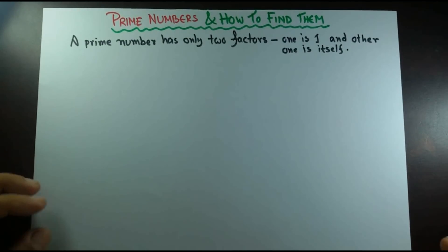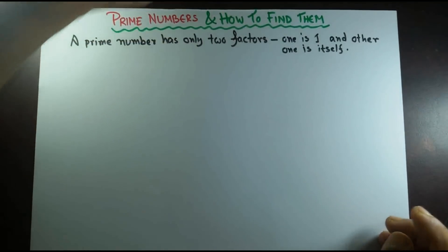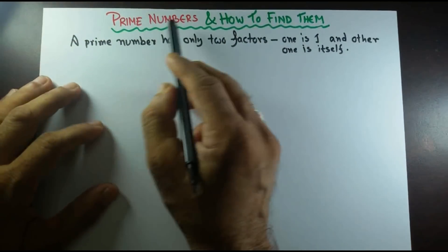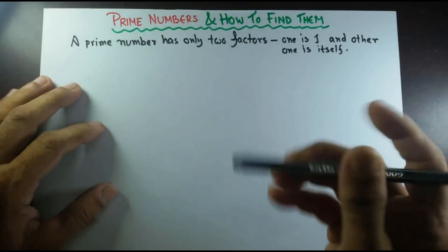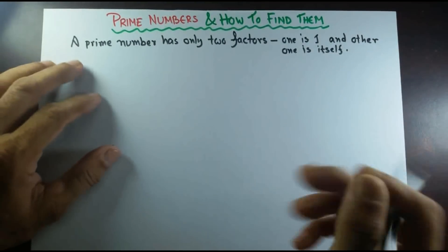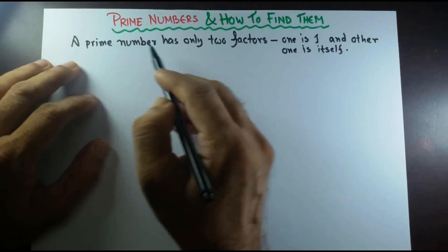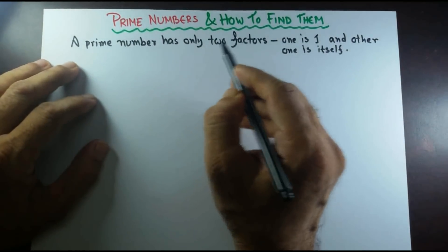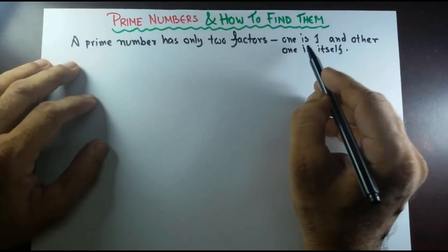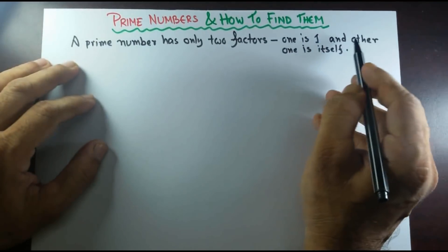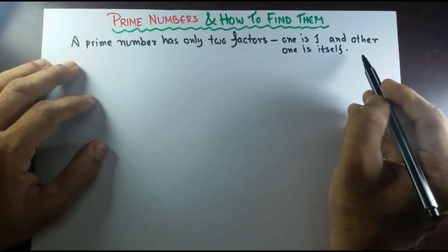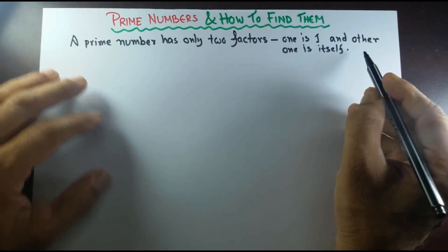Good morning. In today's lecture, I'll cover prime numbers and how to find them. As you know, a prime number has only two factors — one is 1, and the other one is itself.